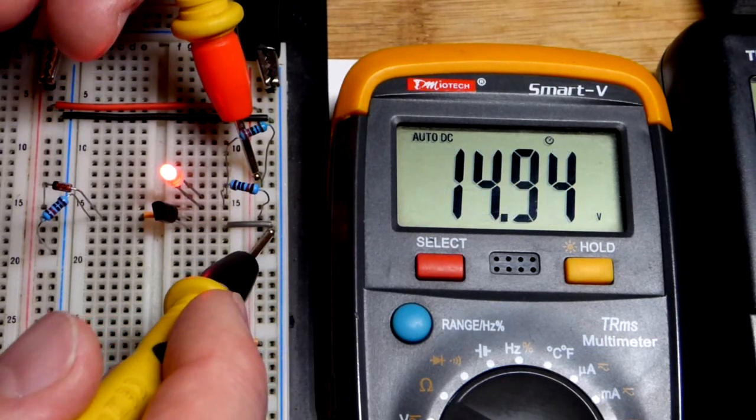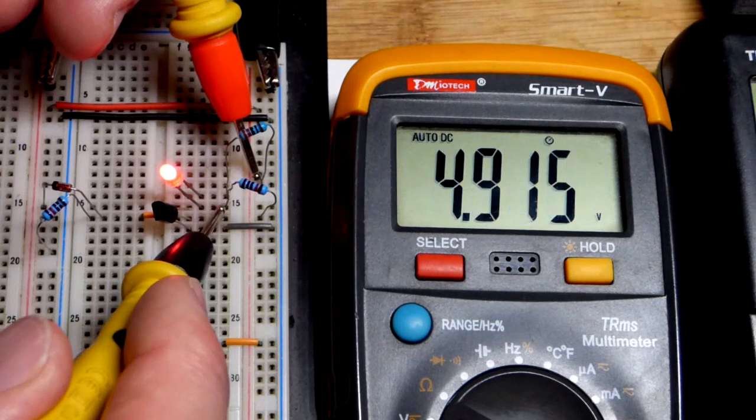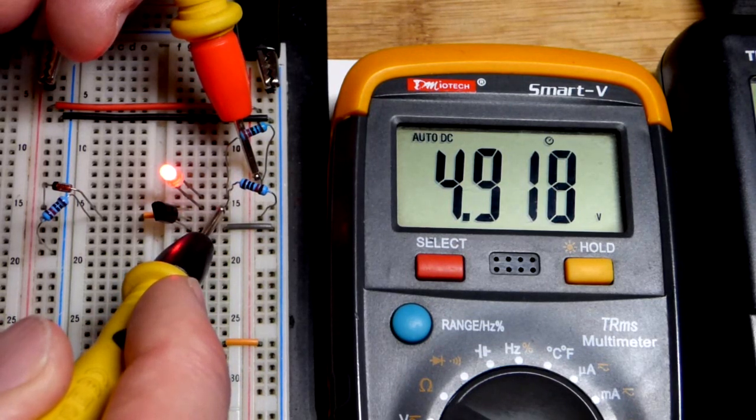But in any case, here we go. We should have basically 15 volts right there. And we come here, LED did fine. So we got 5 volts.